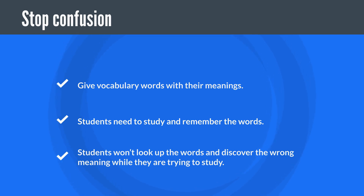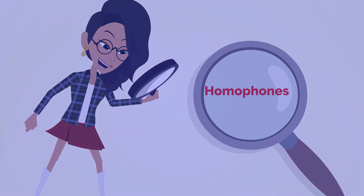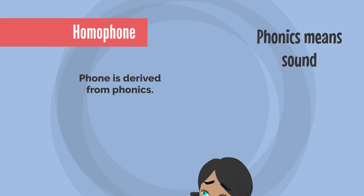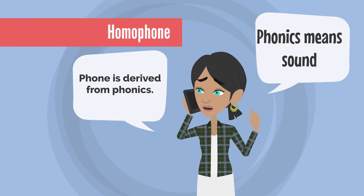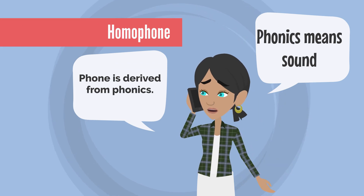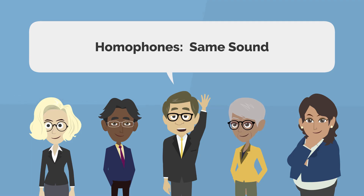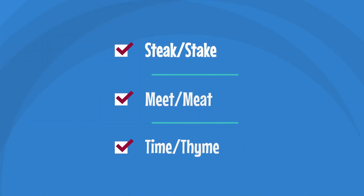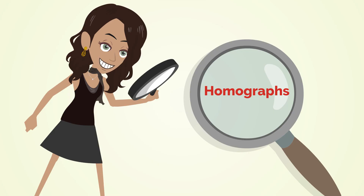Homophones, unlike homonyms, are two words that are spelled differently but pronounced the same way. A key way to remember what homophones are is the word 'phone' — think of phonics, which means sound. Homophones: same sound. Examples of these would be steak and stake, meat and meet, and time and thyme.